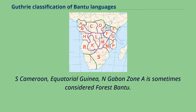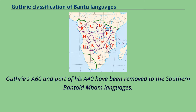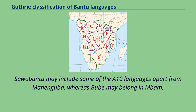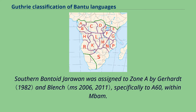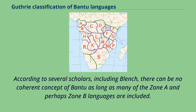Zone A covers Cameroon, Equatorial Guinea, and Gabon, and is sometimes considered Forest Bantu. Guthrie's A60 and part of his A40 have been removed to the Southern Bantoid Mbom languages. Saabantu may include some of the A10 languages apart from Mananguba, whereas Bubay may belong in Mbom. Southern Bantoid Jarawan was assigned to Zone A by Gerhardt and Blench, specifically to A60, within Mbom. According to several scholars, including Blench, there can be no coherent concept of Bantu as long as many of the Zone A and perhaps Zone B languages are included.